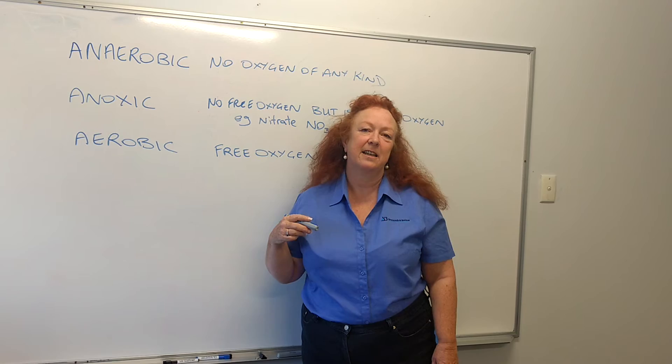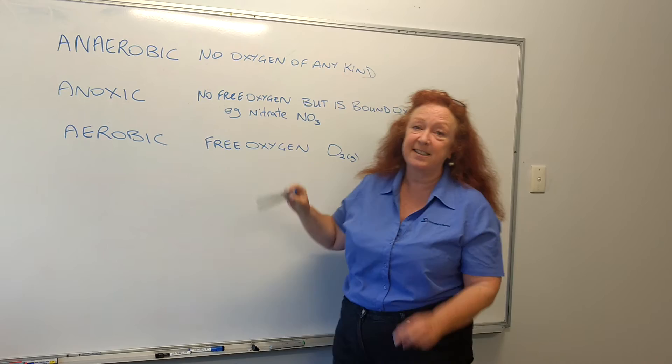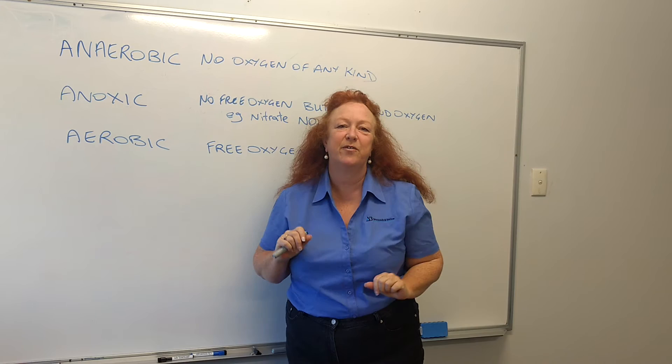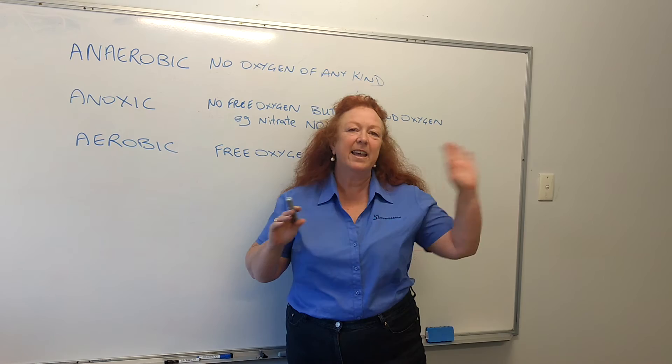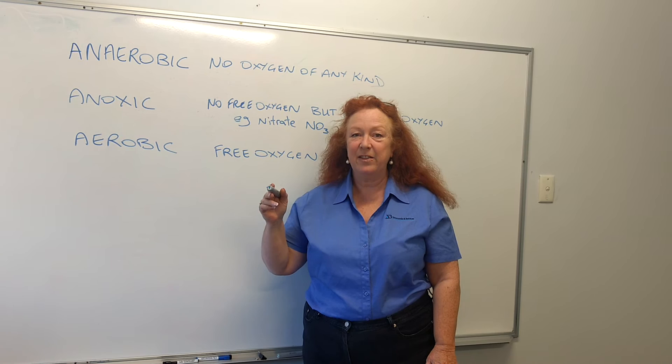The next type of state we can talk about is called anoxic. It means we don't have any free oxygen — so no oxygen gas — but what we do have is bound oxygen. That means oxygen that's chemically bonded to other types of atoms to make molecules of a different kind, something that the bugs can use as an oxygen supply when there is no ordinary oxygen. A good example of that might be nitrate, and that's what your activated sludge microorganisms might breathe in the anoxic zone of an activated sludge reactor.